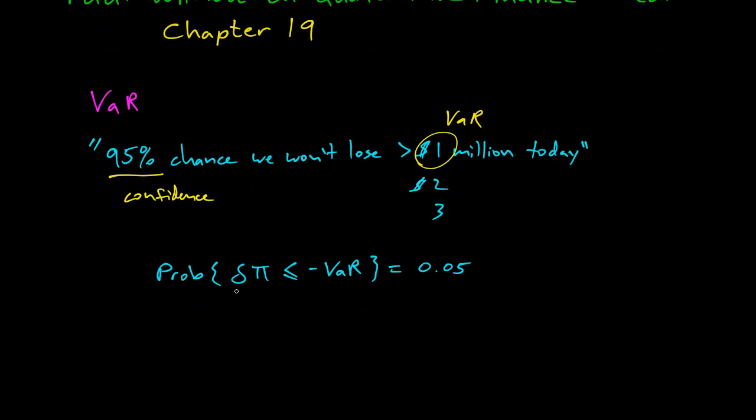And so this is the change in portfolio value, this is the VaR, and this is one minus the confidence. So it's saying the probability that we lose more than the VaR is 5% or 1%, depending on the confidence interval we use.